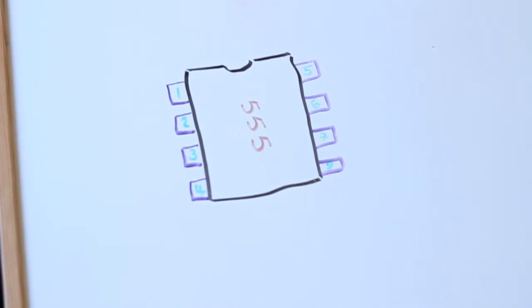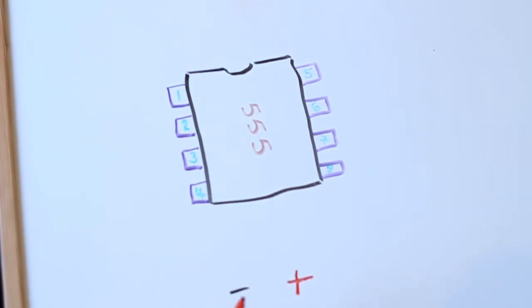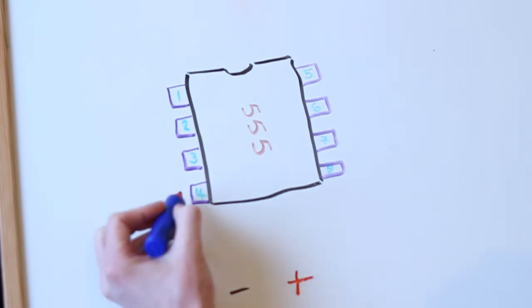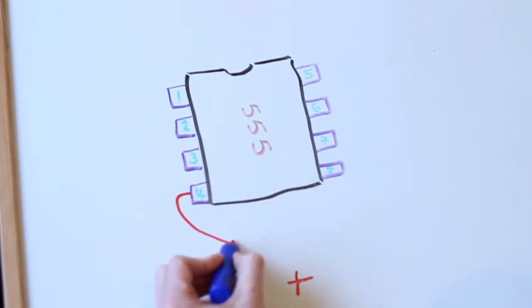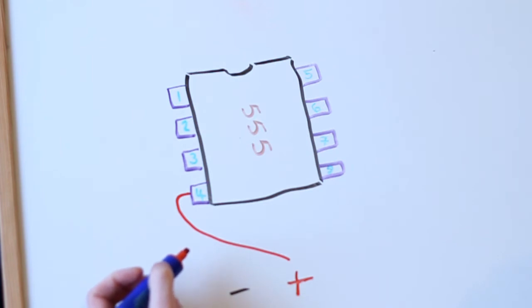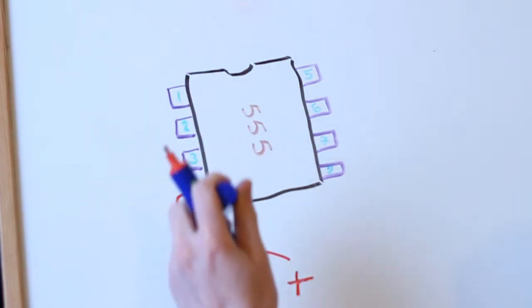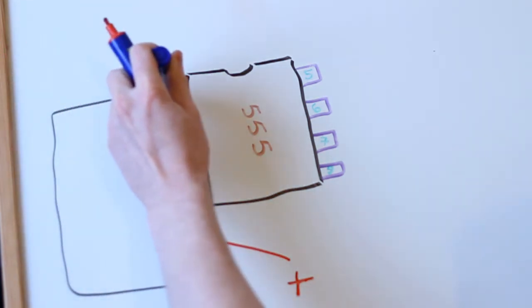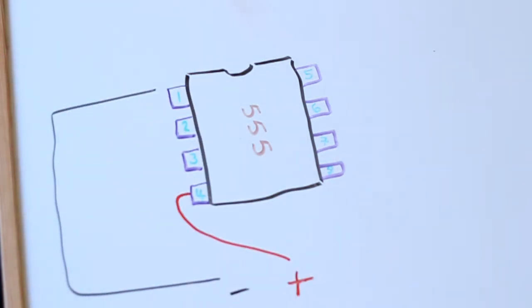First of all, let's say we've got power down here. We've got our plus and we've got our minus, so that's positive and negative. First off, we want to put some wires for power going places, so our first power wire's going to go here, and then we need our negative wire, which will go up here, to pin one.